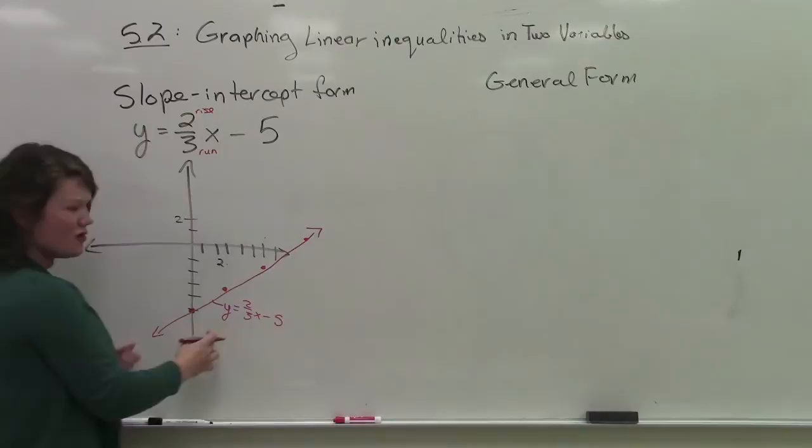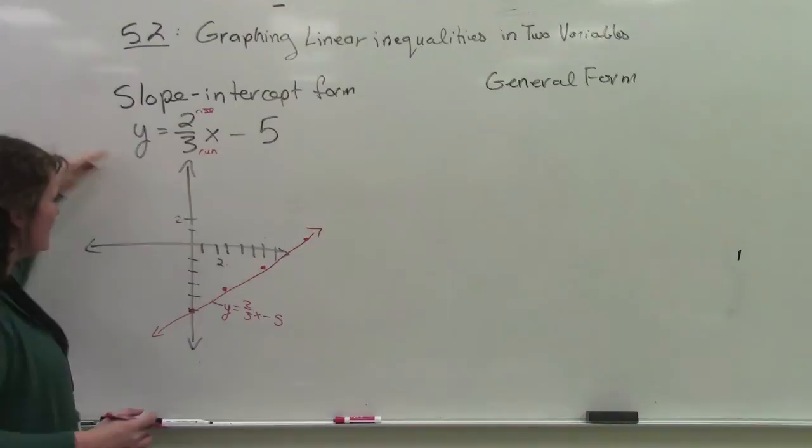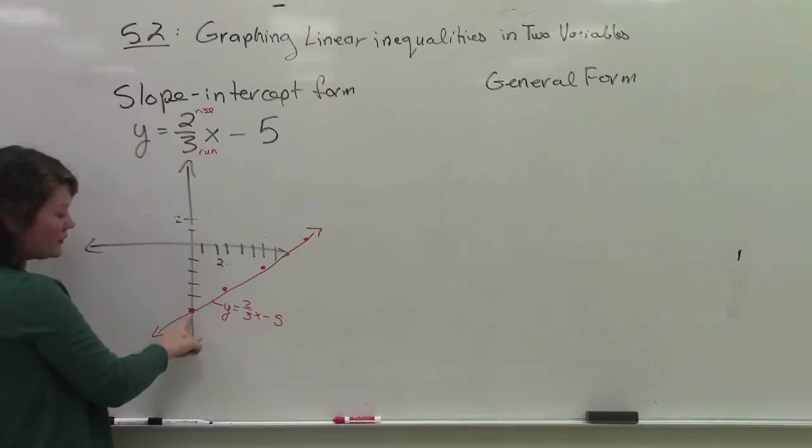Remember what happens if the slope is negative? It will go like this instead. So instead we would maybe go down, down 2 and, if it was negative 2 over 3, down 2 over 3 in the positive direction.